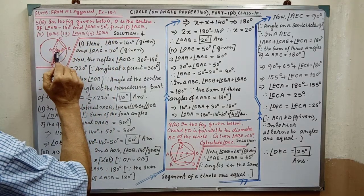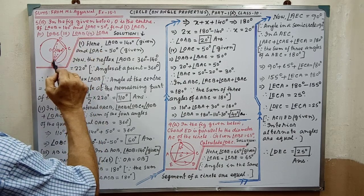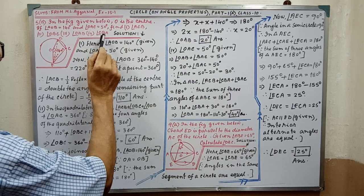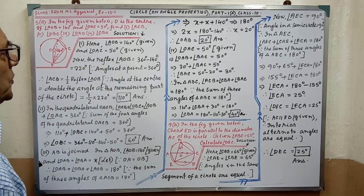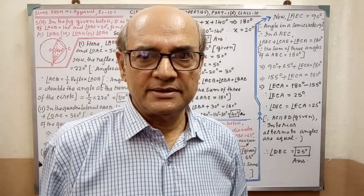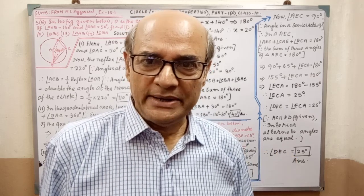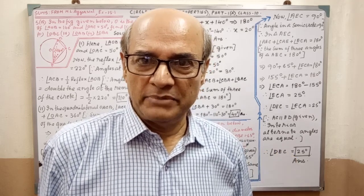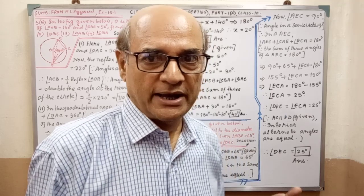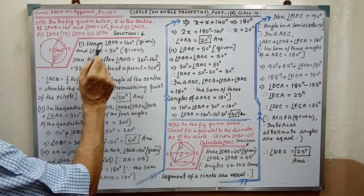Angle AOB equal to 140 degree, angle OAC equal to 50 degree — find the angles. Before the answer, a diagram is given in the question, but in the answer you have to draw the diagram. After drawing the diagram, then you will start.